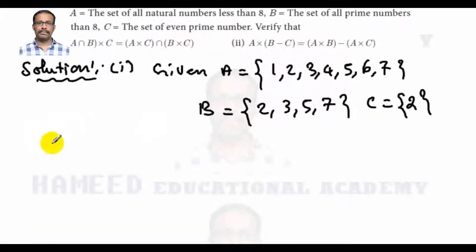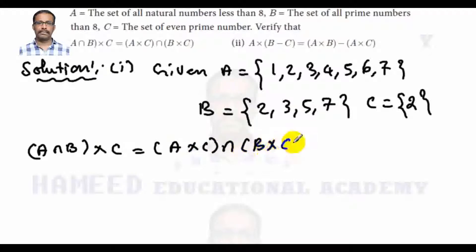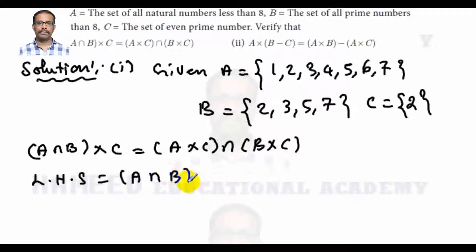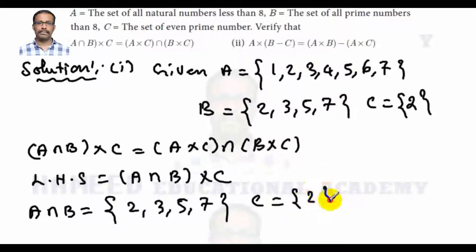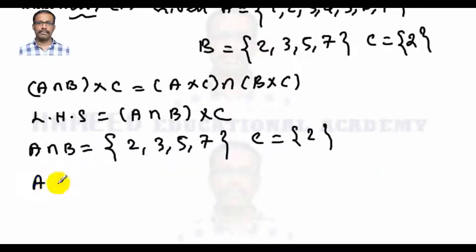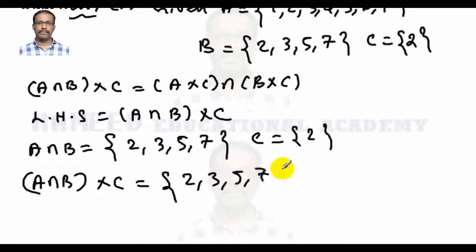Sub-division 1: Verify A ∩ B × C = (A × C) ∩ (B × C). First, find A ∩ B. A = {1,2,3,4,5,6,7} and B = {2,3,5,7}, so A ∩ B = {2, 3, 5, 7}. C = {2}. Now compute the left-hand side: (A ∩ B) × C = {2, 3, 5, 7} × {2}.